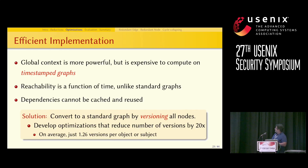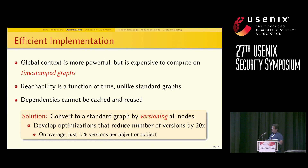Even though taking global context into consideration allows further reduction, it is very expensive to compute on a timestamped graph. Calculating reachability on the graph increases linearly with the size of the data. Also, unlike in a standard graph, we cannot cache and reuse dependency information, because dependencies on a timestamped graph change over time.